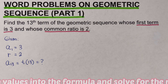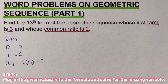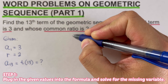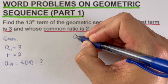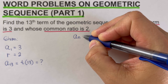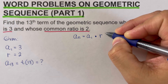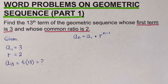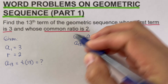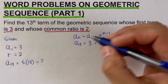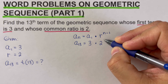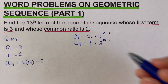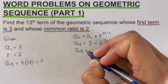The second step is to plug in the given values into the formula and solve for the missing variable. Our missing variable is a sub 13. The formula for the nth term is a sub n equals a sub 1 times r raised to the power n minus 1. With n equal to 13, this becomes a sub 13 equals 3 times 2 raised to the power 13 minus 1.